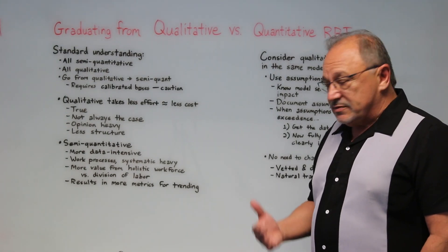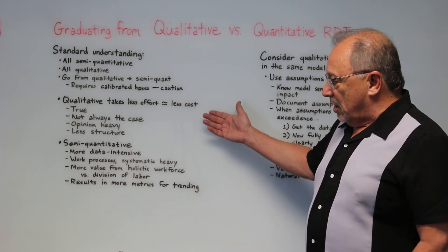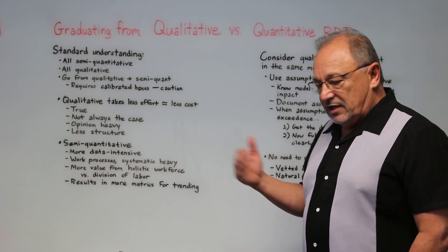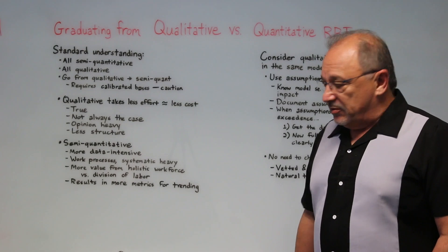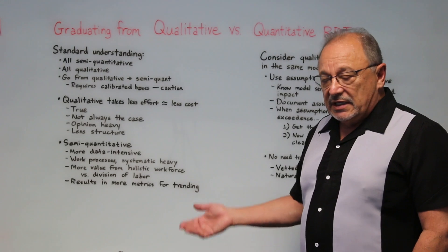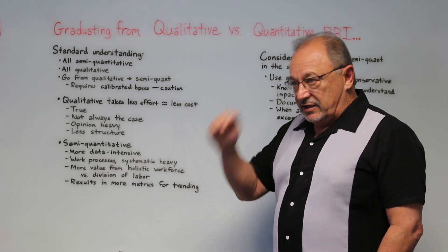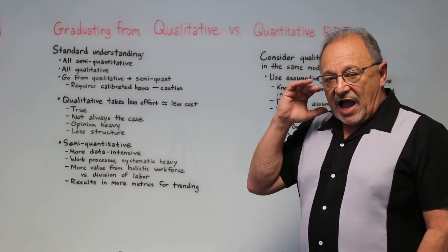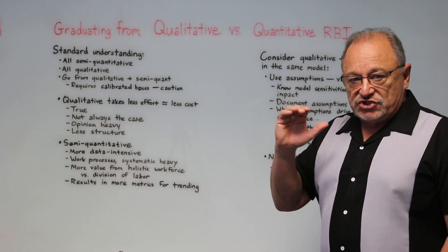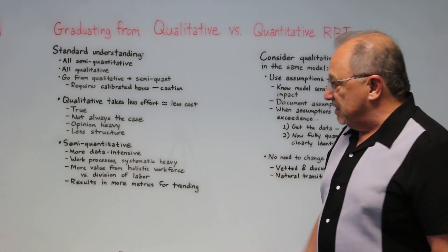When it comes to performance, most owner operators prefer the results of semi-quantitative studies over qualitative studies. The issue is the perceived cost to get there. Something important to think about long-term is sustainability, and top of mind should always be the value you're receiving. I always say motive means a lot — don't do RBI with saving money as the top priority. Go at it with the mindset to optimize everything, optimize resources, optimize efforts, and let risk drive your decisions.